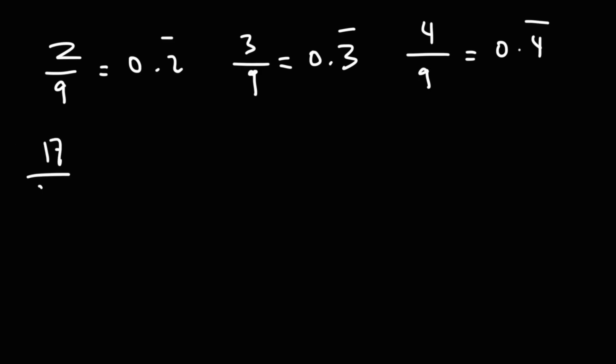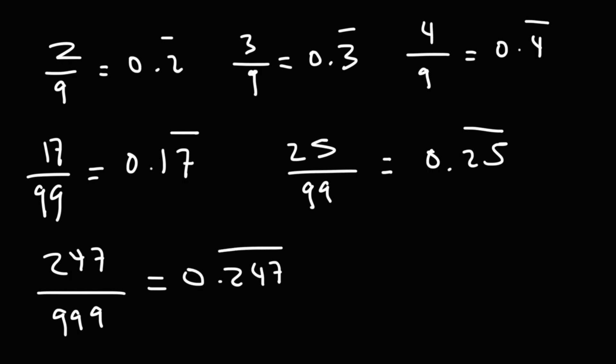17 over 99 is basically 0.17 repeating. 25 over 99 is 0.25 repeating. 247 over 999. That's 0.247 repeating. So with 9s, you can quickly determine what the answer is going to be. So that's basically it for this video. So now you know how to convert certain fractions into repeating decimals.